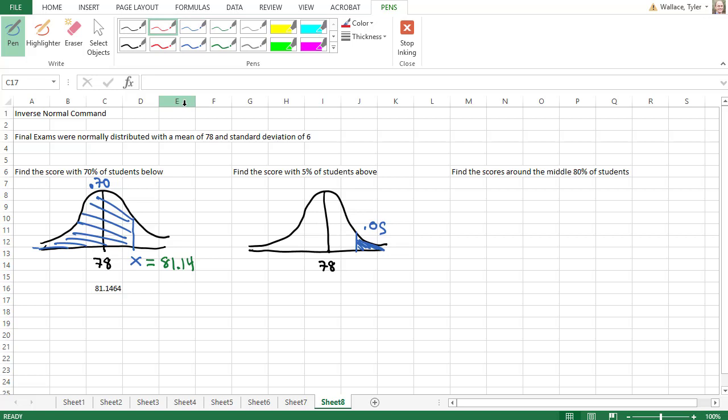The problem is the Excel command is only interested in areas to the left, and so we need to first identify how much area is in that left side and then use the Excel command on that value. We know that the entire curve has 1.0 underneath it because it's a probability distribution. So we'll subtract off the 0.05 on the right side, and that gives us 0.95. So the area to the left this time is 0.95.